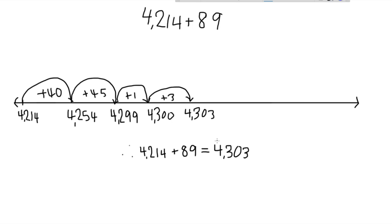The benefit to using an open number line is there's no regrouping like in the traditional method. Using an open number line, we were able to decompose 89 into parts that were easy to add in our head. Thanks for watching.